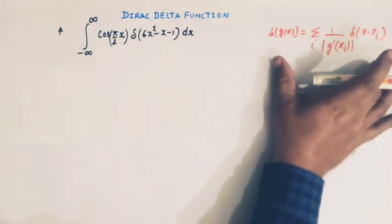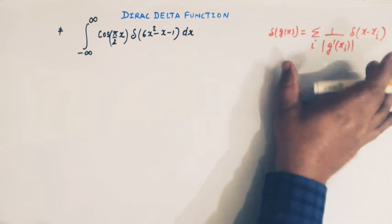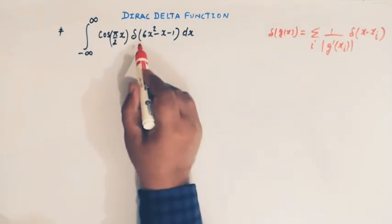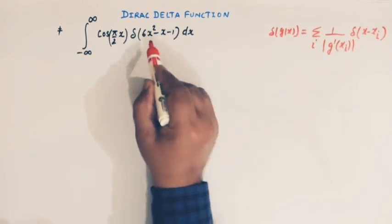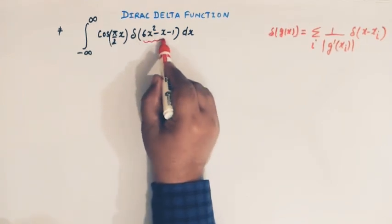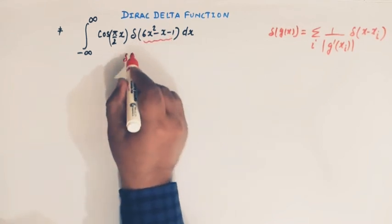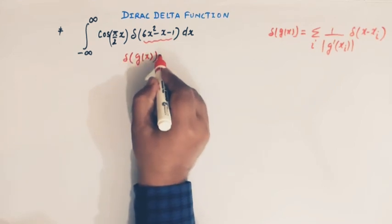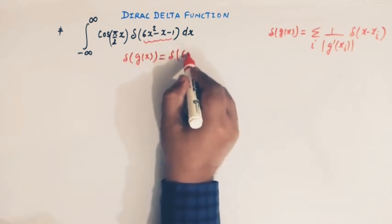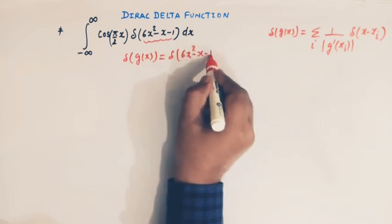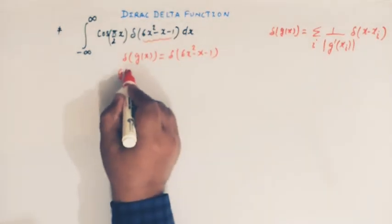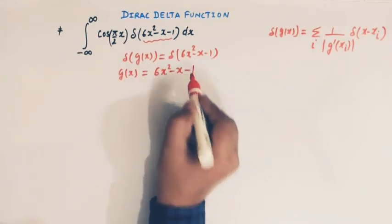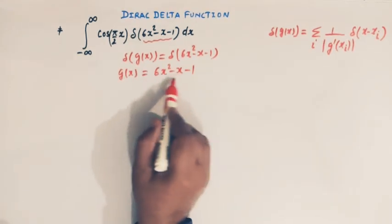We will make use of this property of Dirac delta function. Looking at this integral, we see that the argument of the delta function is the quadratic function g(x) equal to 6x squared minus x minus 1.